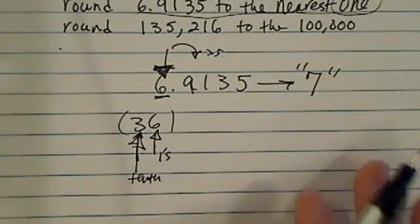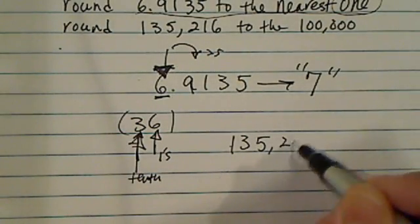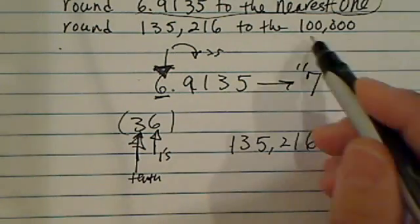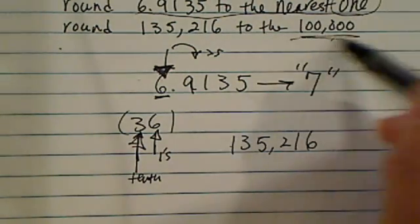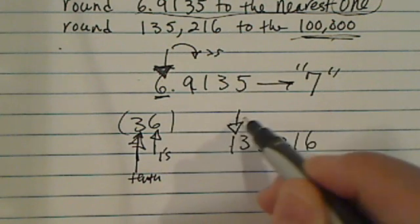Let's take a look at the next example. It says round 135,216 to the nearest hundred thousand place. Hundred thousand place. You can count - this is the hundred thousand place.